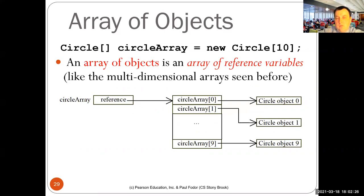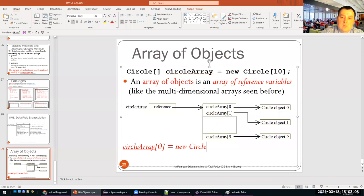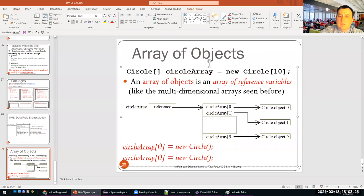Finally, you can create arrays of objects. For instance: 'Circle[] circleArray = new Circle[10]'. The circleArray is a reference to an array of ten null circle references. If you want, you can create circles for each element: 'circleArray[0] = new Circle()' and similarly for the other indices — for example 'circleArray[1] = new Circle(someRadius)'.